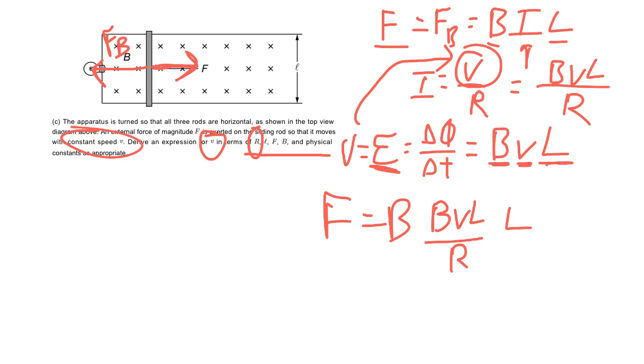So let's just make sure our variables are good. B is good, V is good, L is good, R is good. Now we do have B times B and L times L, so we can kind of simplify those. So ultimately they do want it to be in terms of velocity, so our velocity should be equal to F times R divided by B squared and L squared. And there you go.